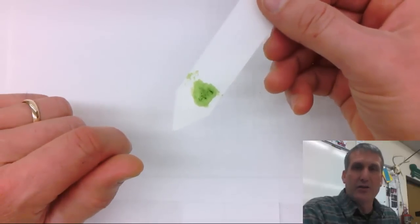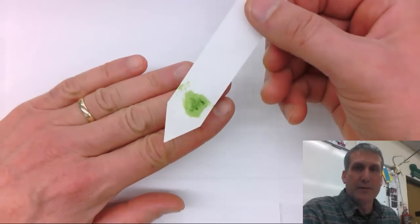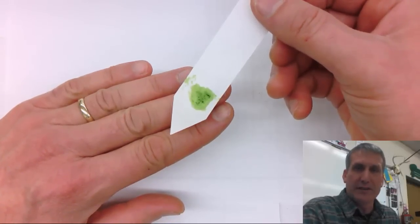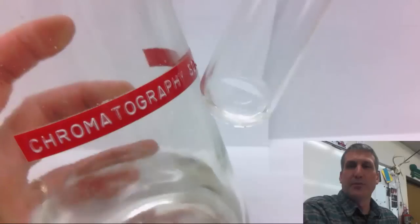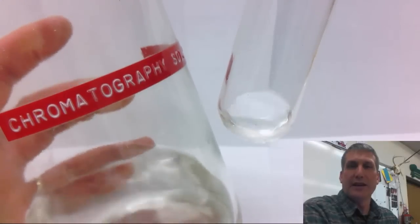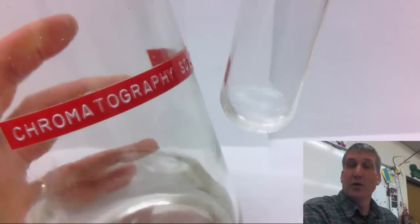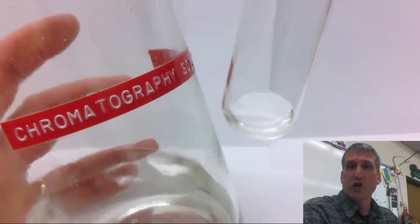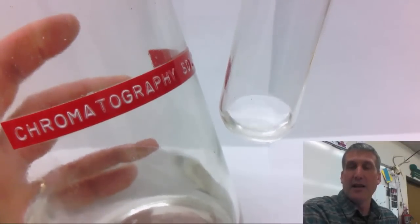You are now ready to run this paper by putting it in the test tube with some chromatography solvents. The next step is to put a little bit of chromatography solvent in the bottom of the test tube. You only need about a quarter of an inch because you only just need the tip of the chromatography paper to be in the solvent.